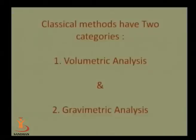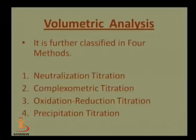In classical methods, we have volumetric analysis and gravimetric analysis. Volumetric analysis is done using burettes, pipettes, and indicators. In volumetric analysis, there are four types of titrations: neutralization titration, complexometric titration, oxidation-reduction (redox) titration, and precipitation titration.